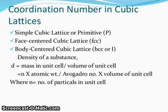Coordination number in cubic lattices. Simple cubic lattice or primitive, represented by P. Face-centered cubic lattice FCC. Body-centered cubic lattice BCC or I. Density of a substance: D equals mass in unit cell divided by volume of unit cell. N times atomic weight divided by Avogadro number times volume of unit cell, where N equals number of particles in unit cell.